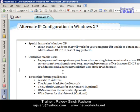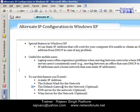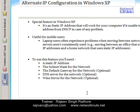To configure an alternate IP address on your machine, what are the basic requirements? First, a static address — a particular address that you want to assign your system in absence of an IP from the DHCP server. Second, the subnet mask for your network. Third, the default gateway. Fourth, DNS address and WINS server address. Default gateway, DNS, and WINS are optional configurations. If you want to configure them you can, otherwise you will need at minimum an IP address and subnet mask. This is the purpose and reason for alternate IP configuration.